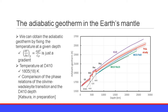Let us obtain the adiabatic geotherm in the Earth's mantle. We have an adiabatic geothermal gradient, but this is just a gradient. Therefore, we need one fixed point of temperature at a given depth to draw the adiabatic geotherm in the mantle. In my study, I estimated the temperature at the 410 km discontinuity to be 1805 ± 18 Kelvin by comparing the phase relations of the olivine-wadsleyite transition with the 410 km discontinuity.